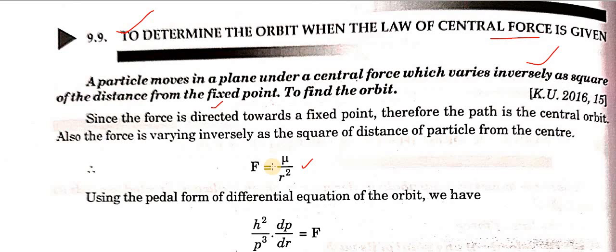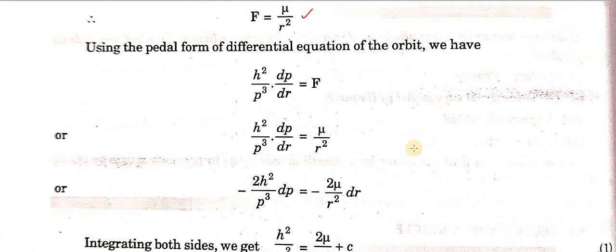The force varies inversely proportional to the square of distance, so we write F = μ/r². What do we need to do? We need to find out the corresponding path — the orbit. We need to use the pedal equation. So if we use the pedal equation here, the corresponding expression is h² / p³ · dp/dr equals F.